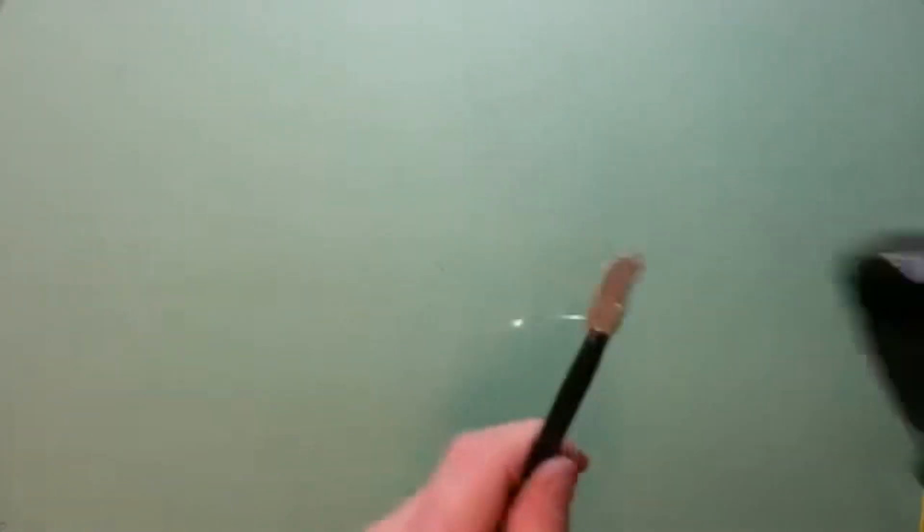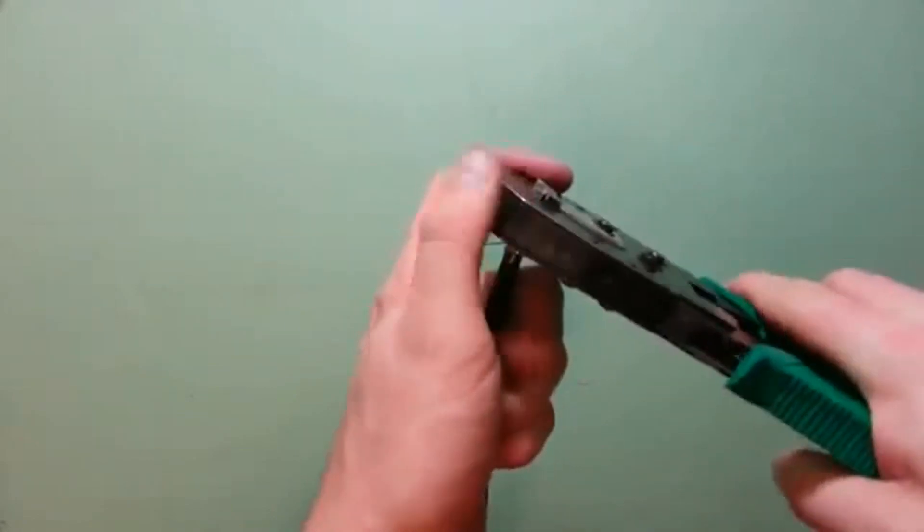Place the tough cable connector and twisted pair cable into the cable crimper and press firmly.